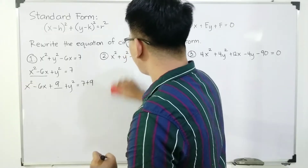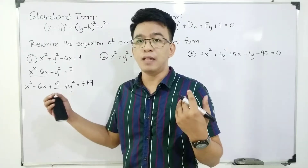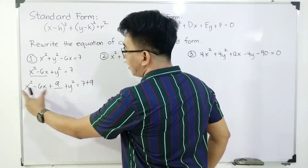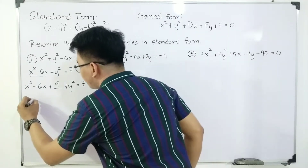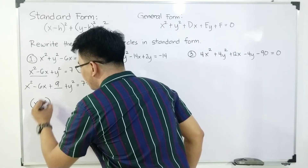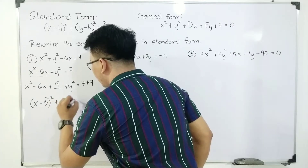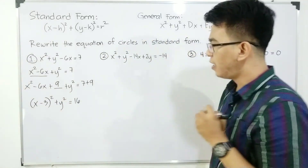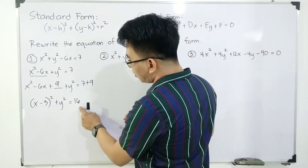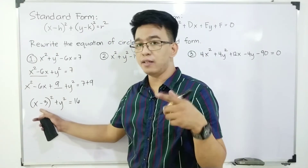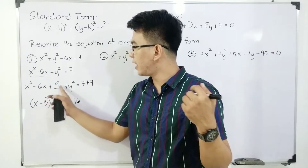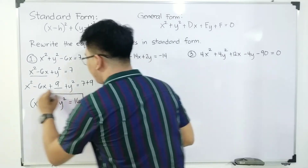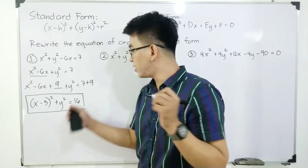Since the variable y doesn't have a linear term, we leave it as is. We express the trinomial as a squared binomial. When we factor, x squared minus 6x plus nine becomes x minus three squared. So the standard form is: x minus three squared plus y squared is equal to sixteen.